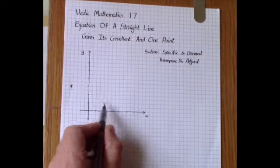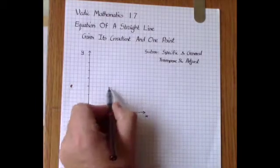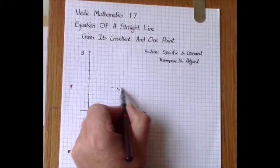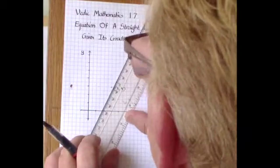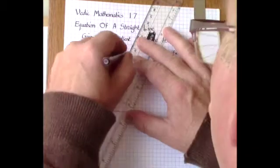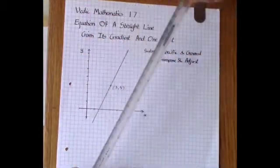Let's suppose that you have a point whose coordinates are 3, 3 and that we've got a line with a gradient of 2 which will look something like this. And we want to find the equation of the line.